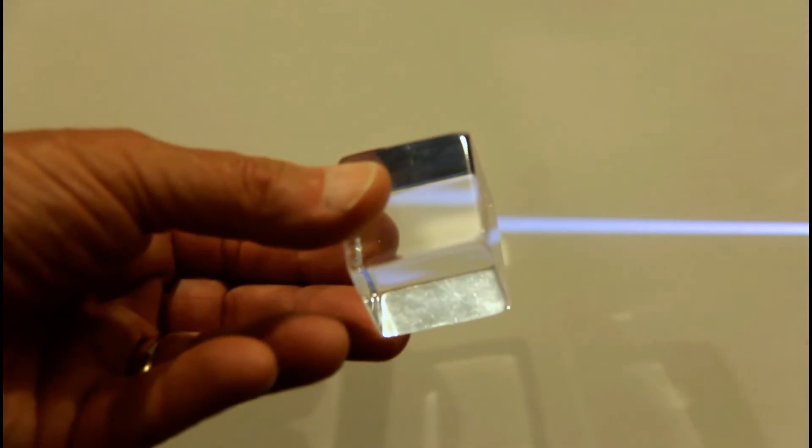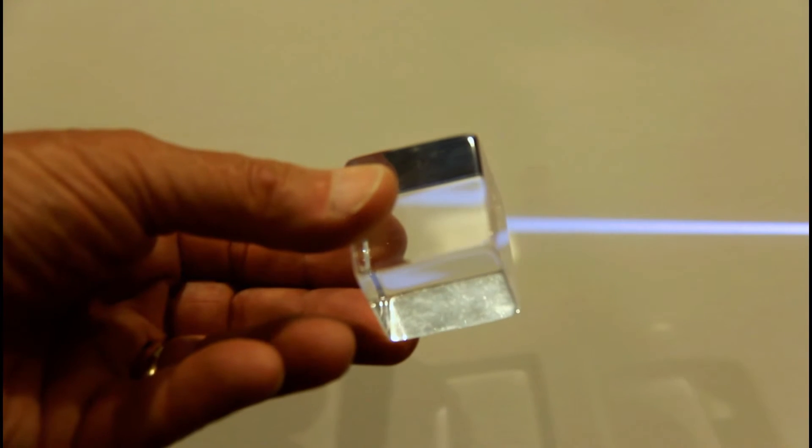Refraction is the property that makes lenses work. Let's do one more demonstration of refraction using this plastic block. As I rotate the block, you can see that the light is moved up and down. This is due to refraction.